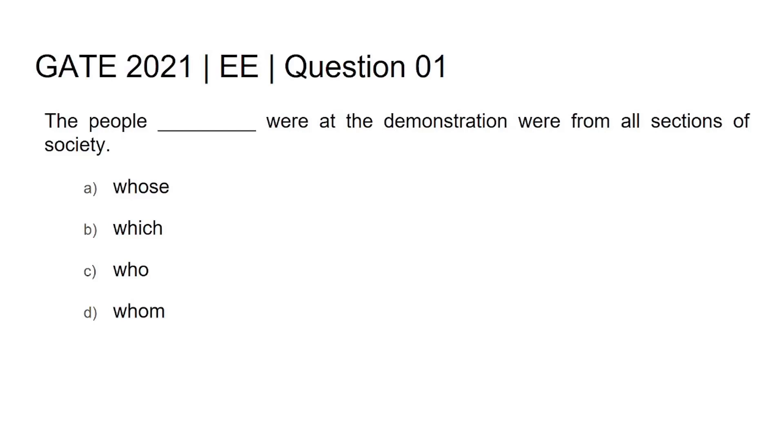Hi, GATE 2021 Electrical and Electronics Engineering question number one. The question is: The people blank space were at the demonstration were from all sections of society. Given answer choices are choice A whose, choice B which, choice C who, choice D whom.